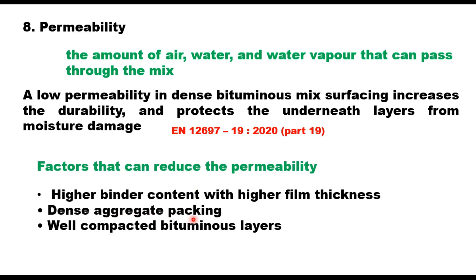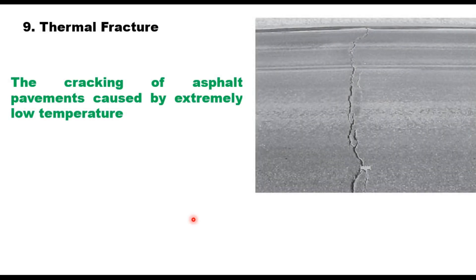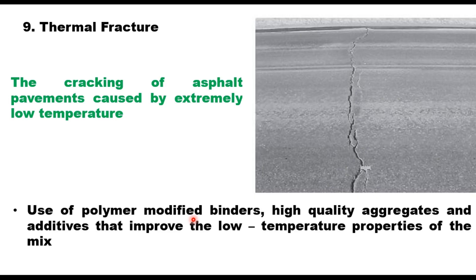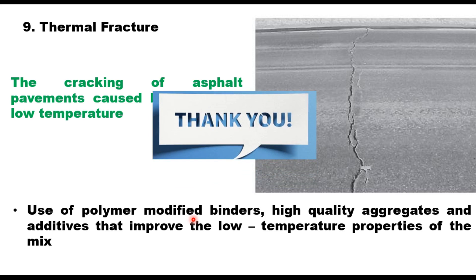The last factor affecting performance is thermal fracture — the cracking of asphalt pavements caused by extremely low temperatures. Low temperature cracking is one of the major distresses in asphalt pavements since it is irreversible and expensive to repair. It can be a serious problem in cold regions as well as in areas with large daily temperature fluctuations. Use of polymer modified binders, high quality aggregates, and additives that improve low temperature properties can be used to improve the thermal fracture performance of the asphalt mixture.